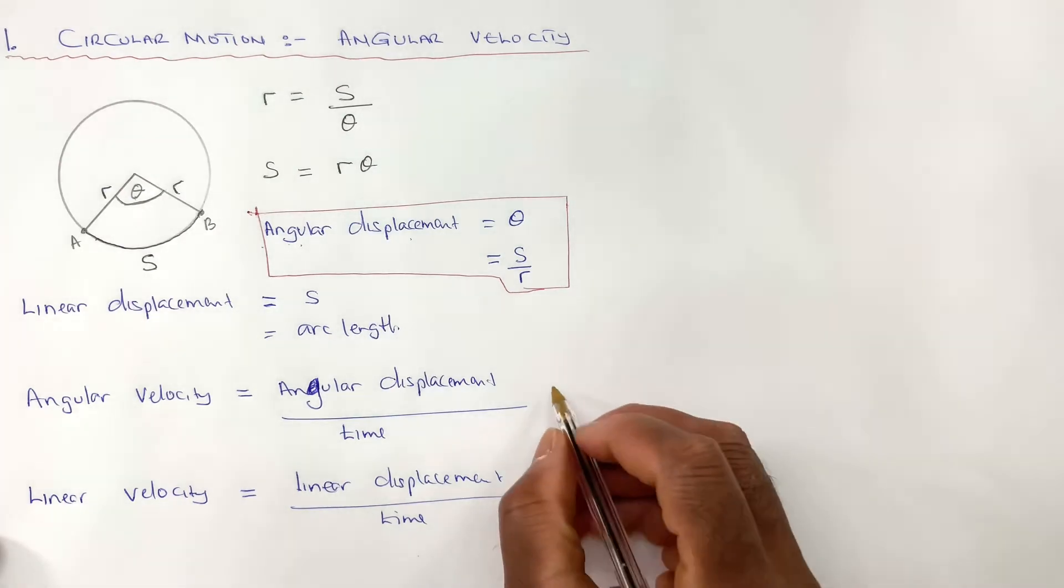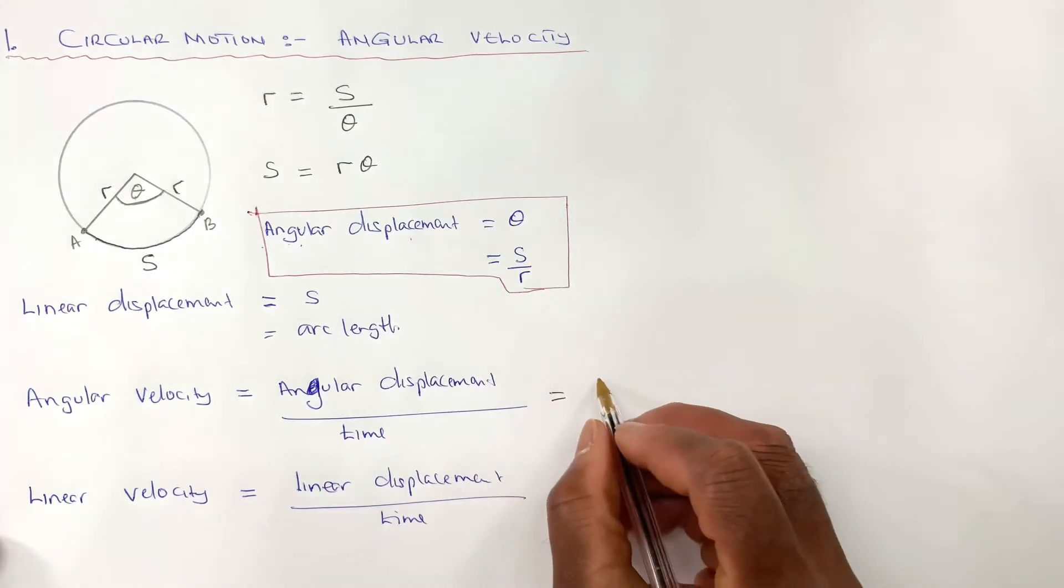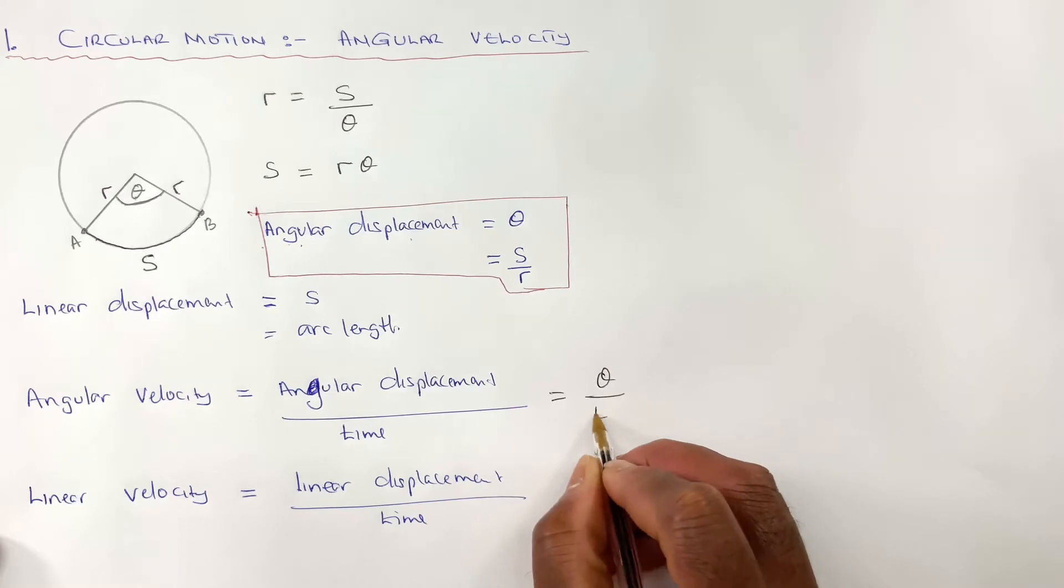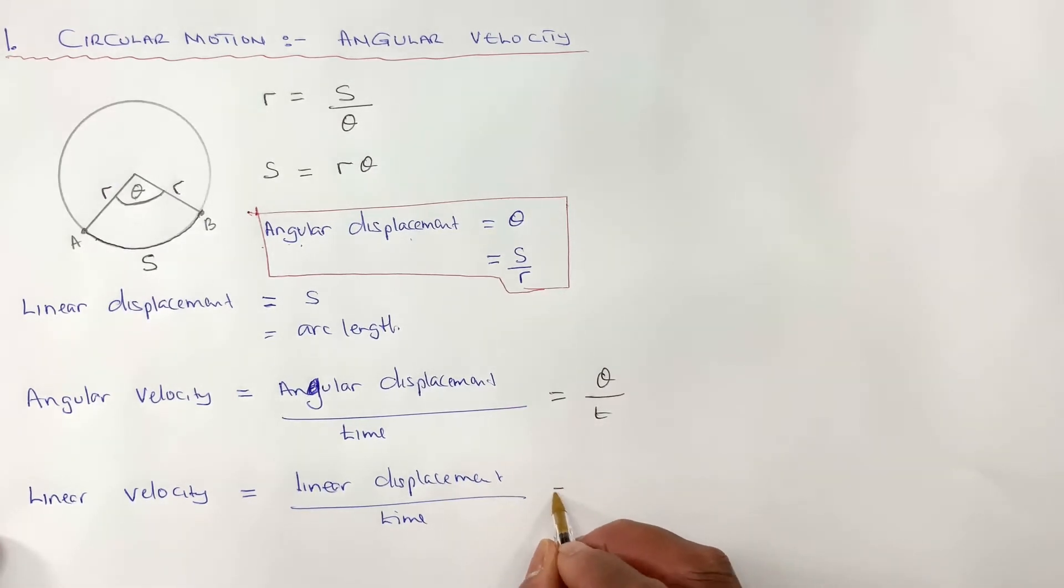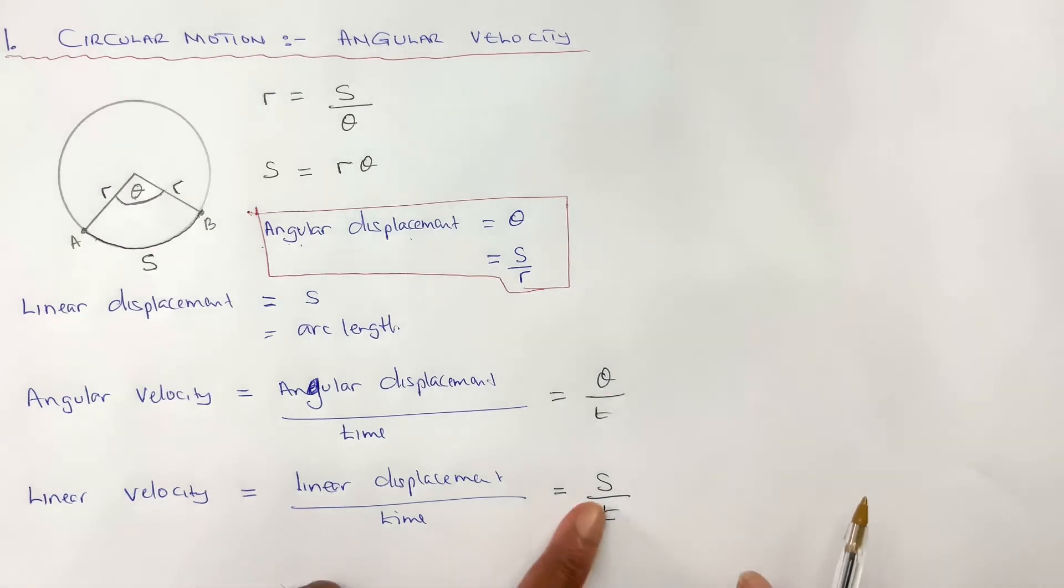The angular displacement is theta, so we have theta over T. And the linear displacement will be S. Go from A to B, S over T. So the linear velocity is S over T.